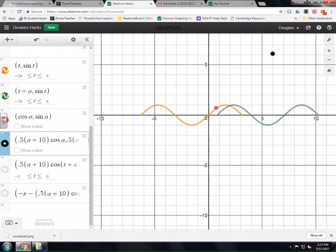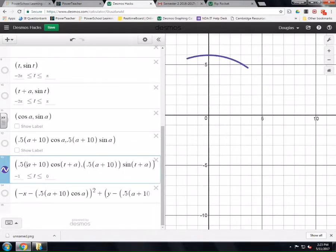So here I have another one. And this time what I did, let's get rid of some of the clutter here. So this time what I did is I made, instead of cosine A sine A, I made a cosine of T plus A sine of T plus A.